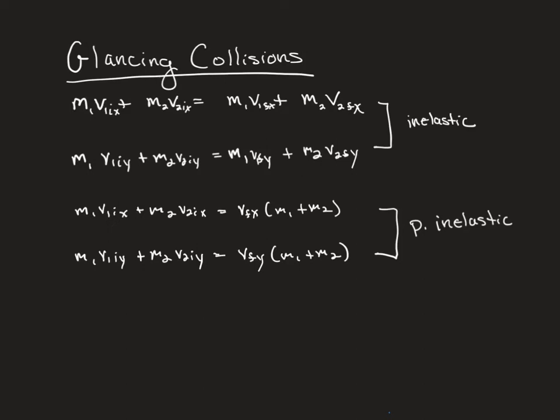In the last section of this topic, we're going to discuss glancing collisions. What happens if we have an object coming up like this and an object coming up like this? How do we handle that?